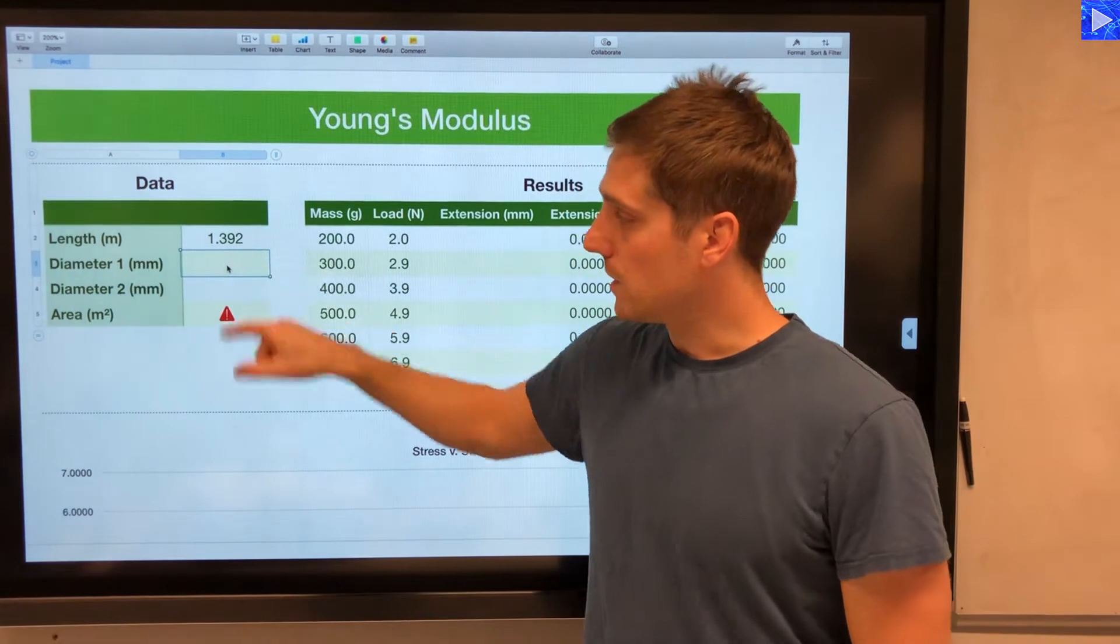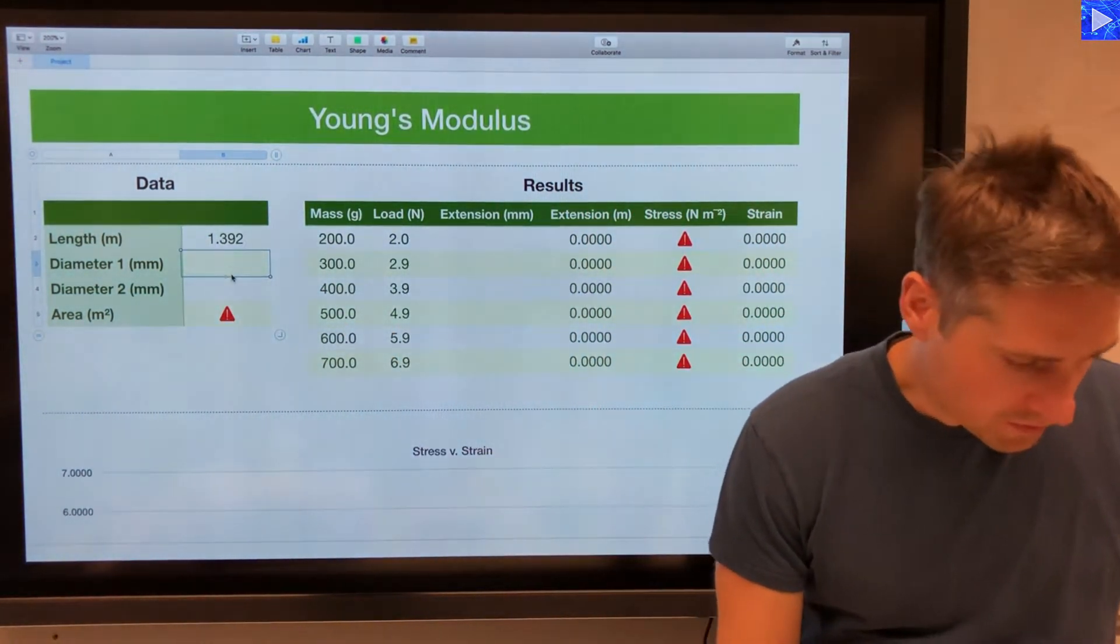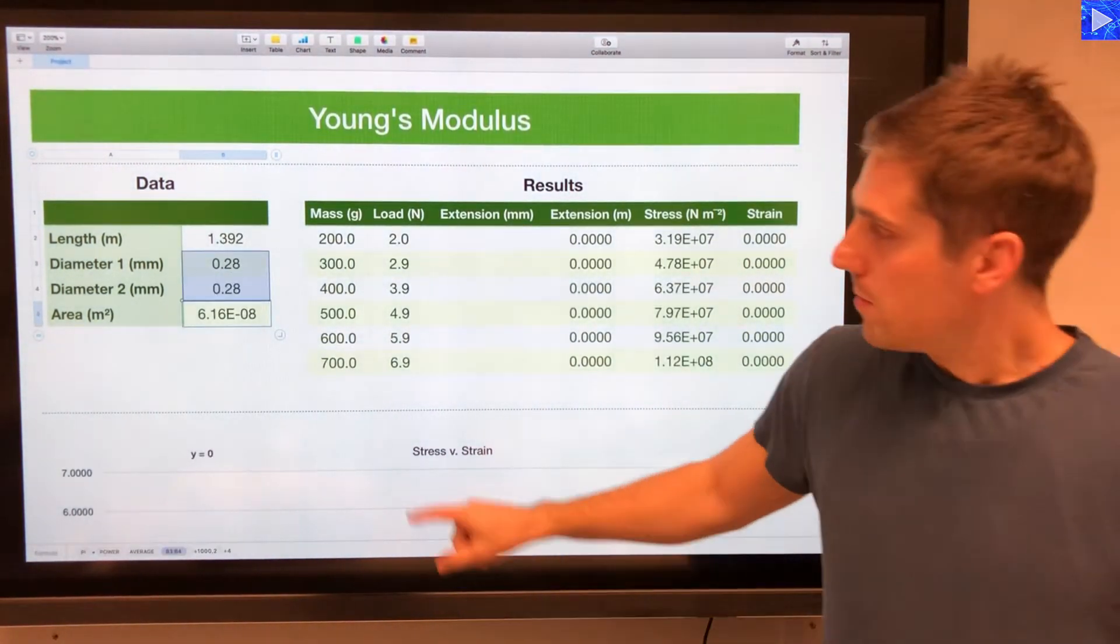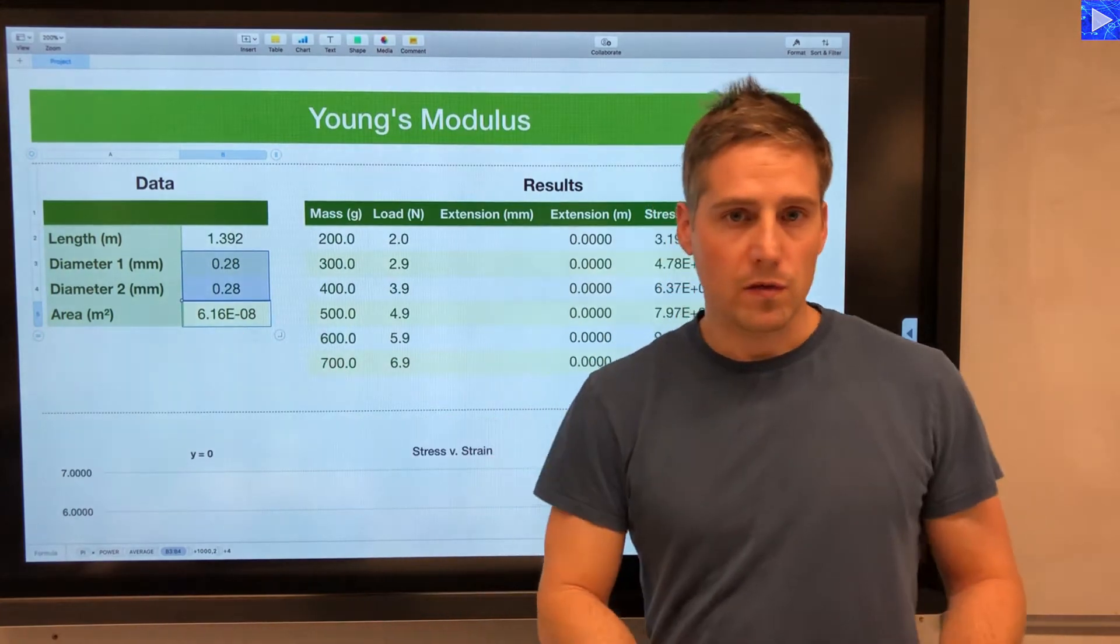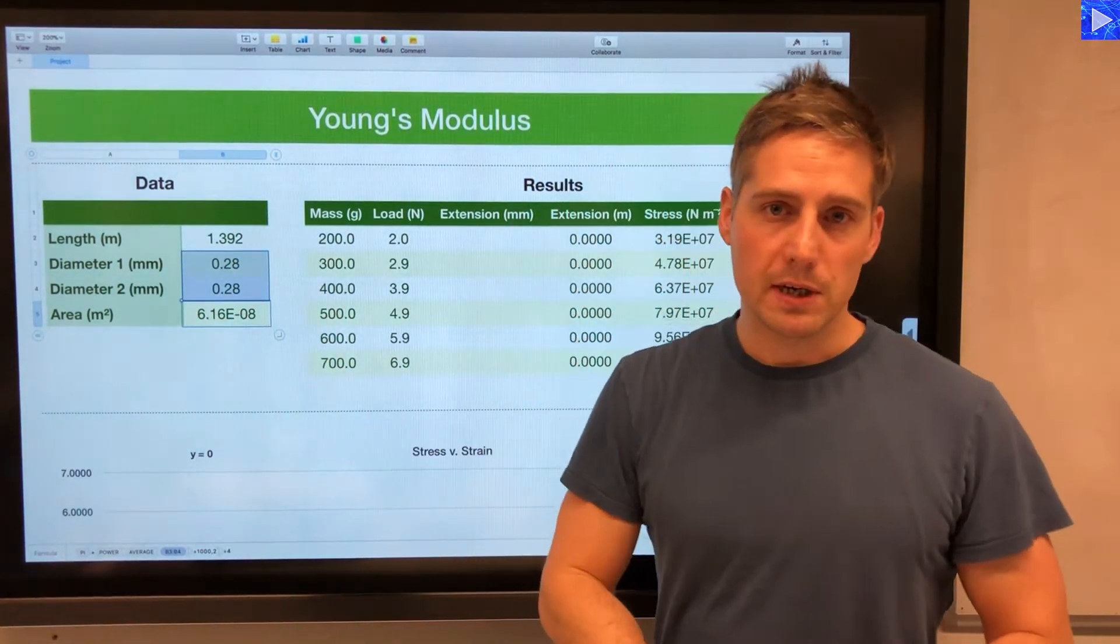I need to insert my two diameter measurements. Now both of those were 0.28, so I'm putting those in there and my formula here is automatically converting these from millimeters into meters.